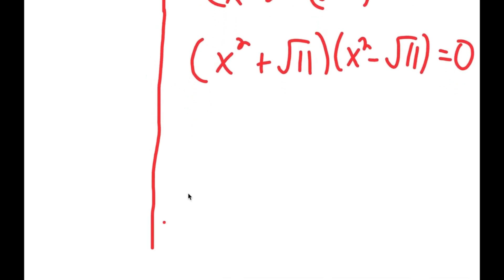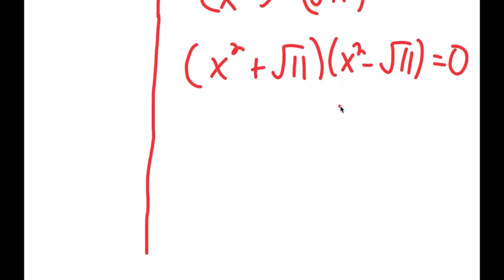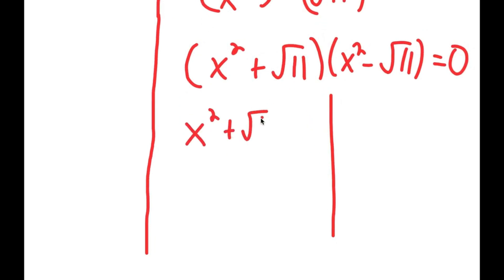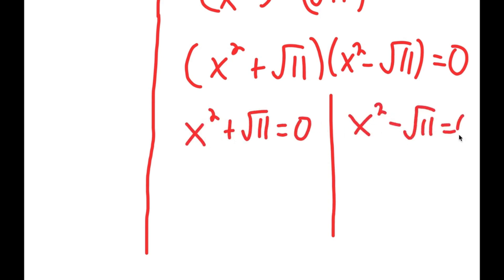So I get x squared plus the square root of 11 times x squared minus the square root of 11 equals 0. Again I get two equations: x squared plus the square root of 11 equals 0, and x squared minus the square root of 11 equals 0.